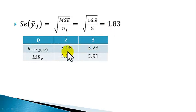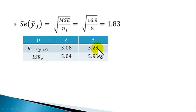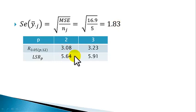Setting up the table with p ranging from 2 to 3 (since there are only 3 treatments). From Duncan's multiple range table using alpha equals 0.05 and error degrees of freedom 12: for p equals 2, r(0.05, 2, 12) equals 3.08; for p equals 3, it equals 3.23. To obtain the least significant ranges, multiply these by the standard error of 1.83: LSR for p equals 2 is 3.08 times 1.83 equals 5.64; LSR for p equals 3 is 3.23 times 1.83 equals 5.91.